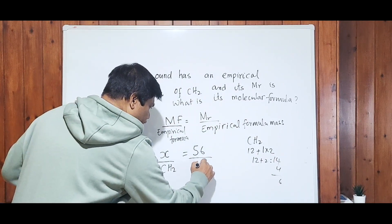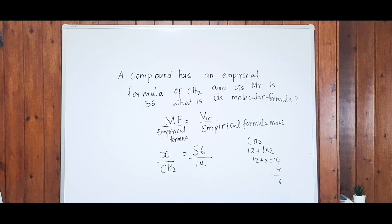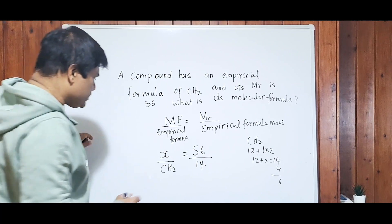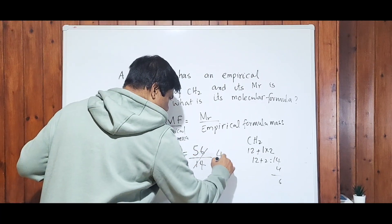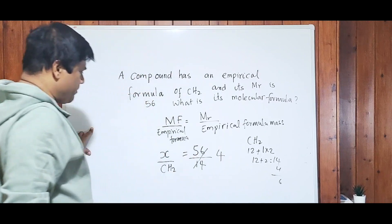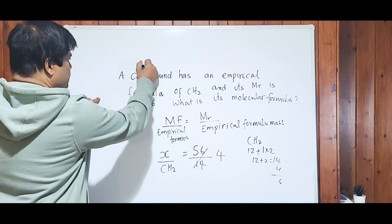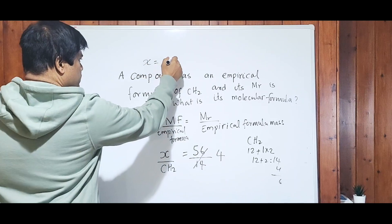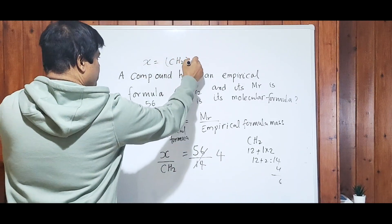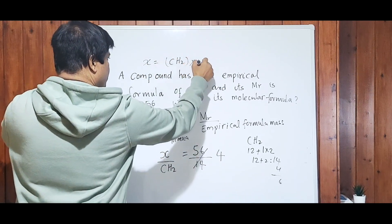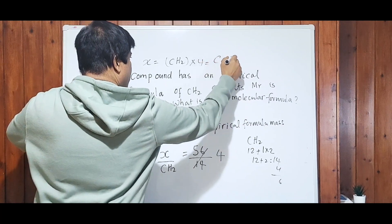So 56 divided by 14 goes 4 times. Therefore x = CH₂ × 4, which gives C₄H₈. That is how you figure out the molecular formula from the empirical formula.